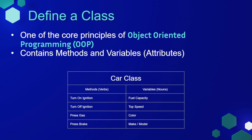A class is one of the core principles of object-oriented programming, which is a type of programming often used in game development. Each class contains methods, which are verbs, and variables, which are nouns. So if we were to define a car class, some methods may be turn on the ignition, turn off the ignition, press the gas, press the brake. Some variables or attributes of a car would be the fuel capacity, top speed, color, make, model, and many others.